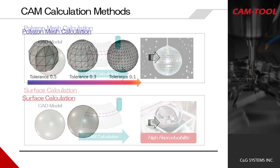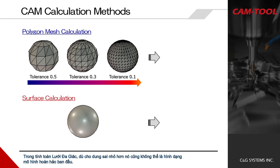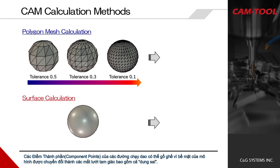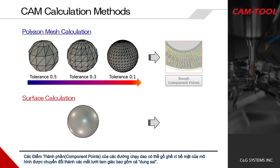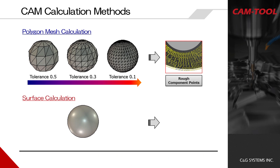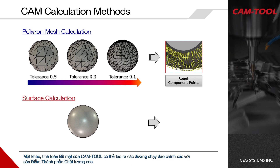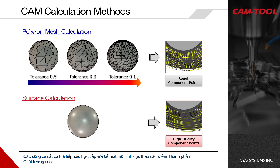In polygon mesh calculation, even if the tolerance is getting tighter, it cannot perfectly reproduce the original model shape. The component points of the toolpaths can be rough because the surface is converted to triangular meshes including tolerance. On the other hand, CamTool's surface calculation can generate accurate toolpaths with high-quality component points, allowing cutting tools to directly contact the model surface along those points.